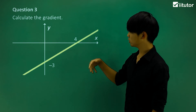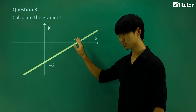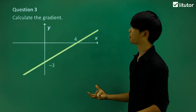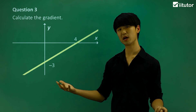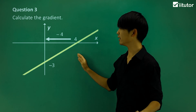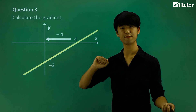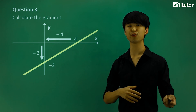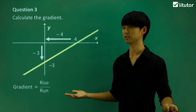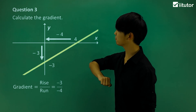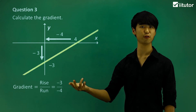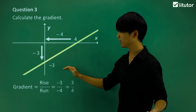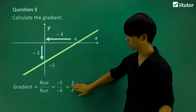Now looking at question 3, we're still going to calculate this line's gradient. Note we're going to use the same values, but we're going around this graph to see the different gradients we can get. We're only interested in the rise over run. The run from 4 to 0 is negative 4, and the rise is negative 3. So gradient equals negative 3 over negative 4, and dividing two negatives gives us a gradient of 3 over 4 — a positive gradient.